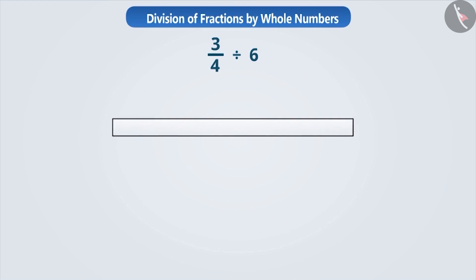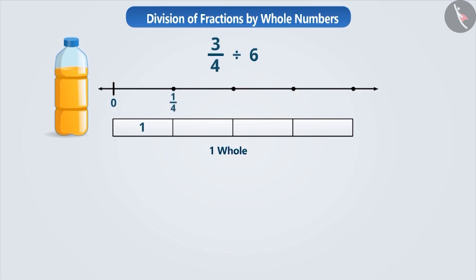Here we are dividing a fraction by a whole number. Suppose we consider this strip to be a whole number. The bottle contains three-fourth litre juice. To represent it, we will make four equal parts of the strip. On the number line, the first part will be expressed as one by four, the second as two by four, the third as three by four, and the fourth as four by four, that is one. Three of these four parts are taken, so we will shade the three parts.